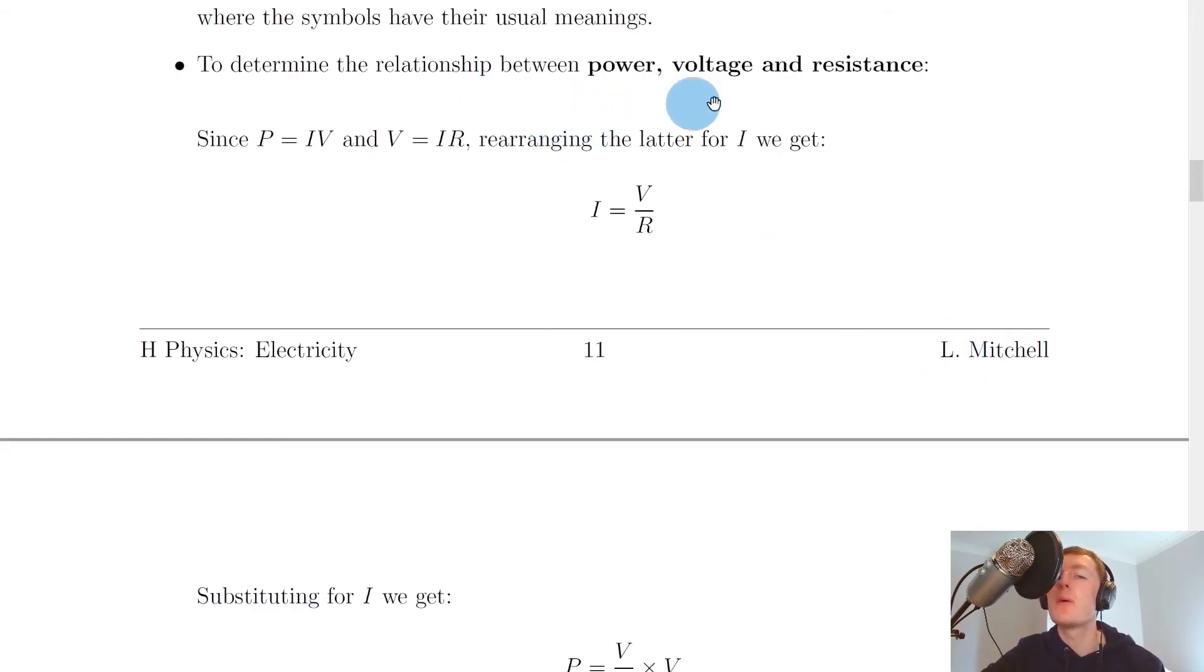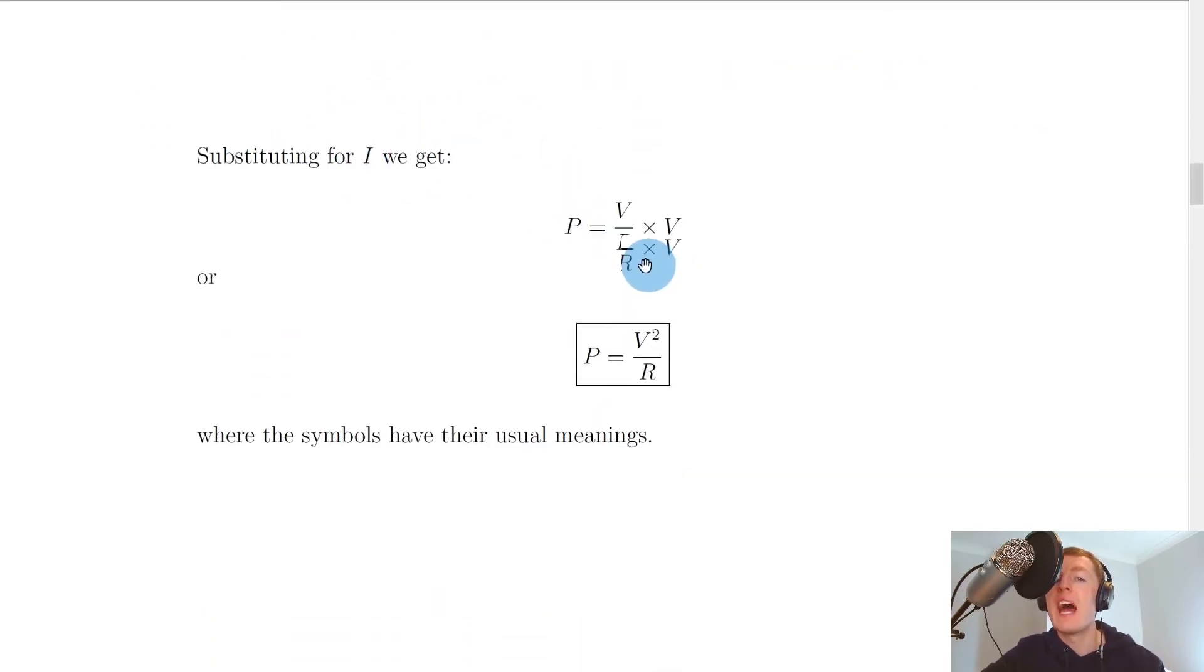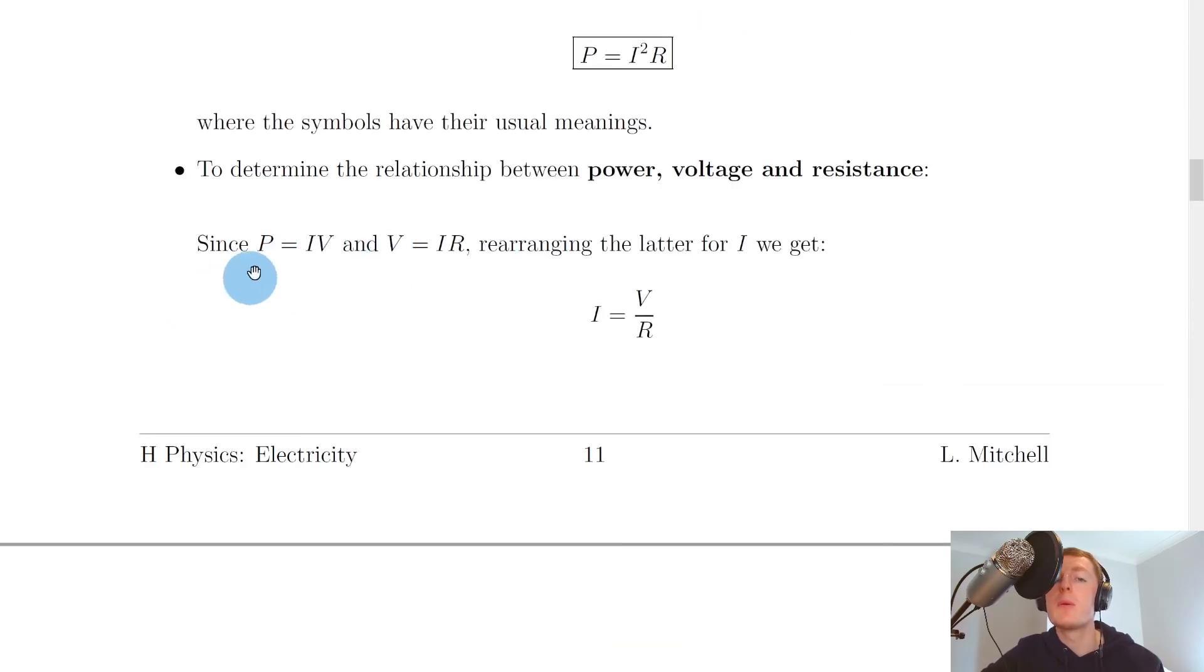Lastly, to determine the relationship between power, voltage, and resistance: since P = IV and again from Ohm's law V = IR, if we rearrange this one for I, then we get I = V/R. And if we now substitute for I in this equation here for P = IV, then we would get P = (V/R) × V.